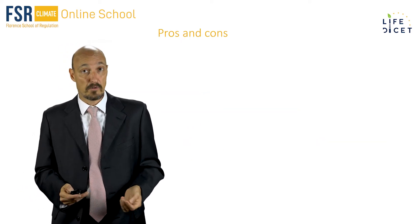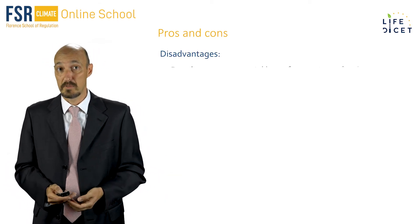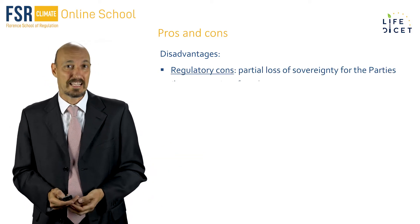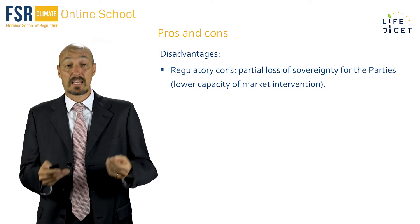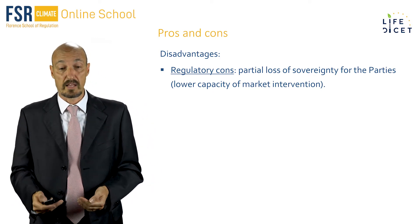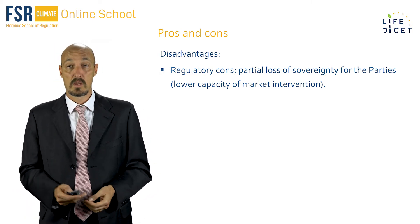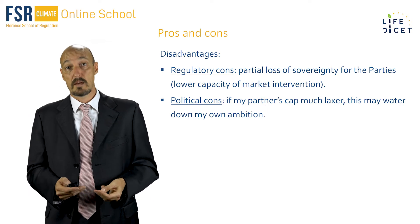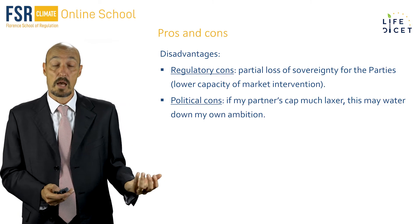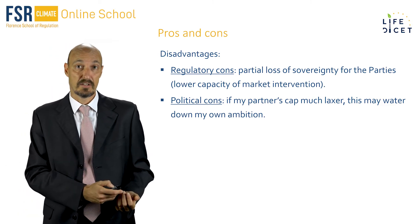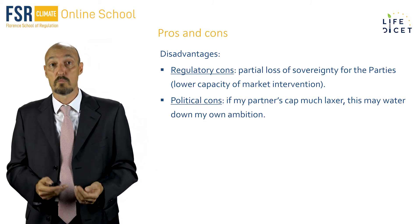But as any other marriage, linking also has disadvantages. First of all, you have to give up some freedom in the marriage, and this happens also with linking. Linking may diminish the capacity of the jurisdiction to intervene on the market, causing a partial loss of sovereignty for the parties. Secondly, there can be political consequences. If you're linked to the wrong partner, if my partner's cap is much laxer, this may water down my own ambition and possibly create credibility problems to my own ETS.